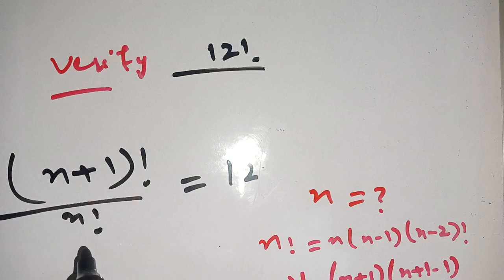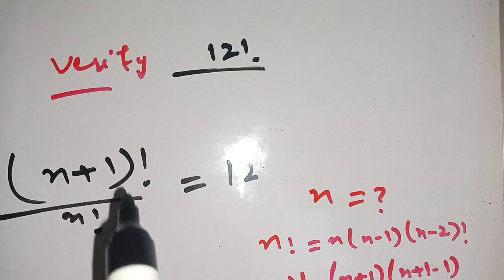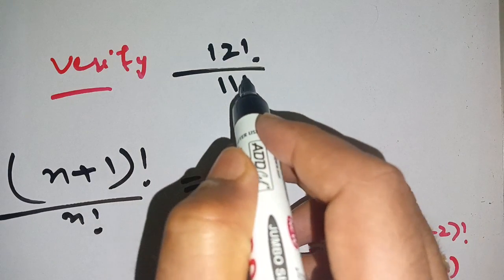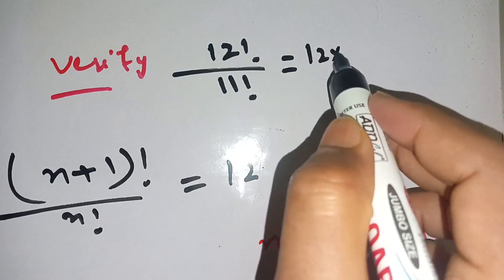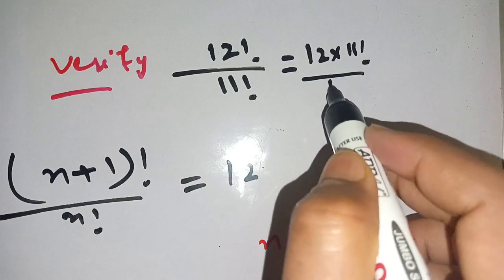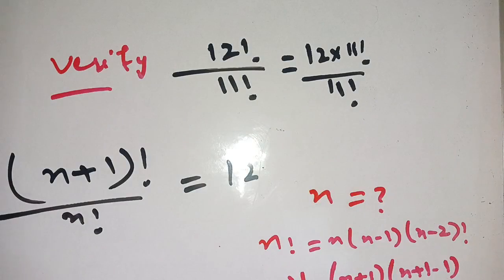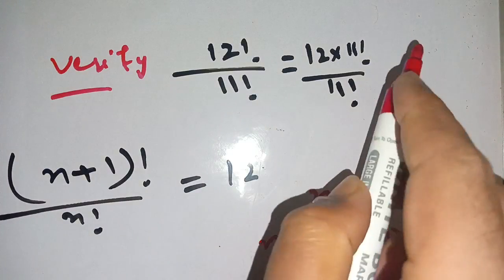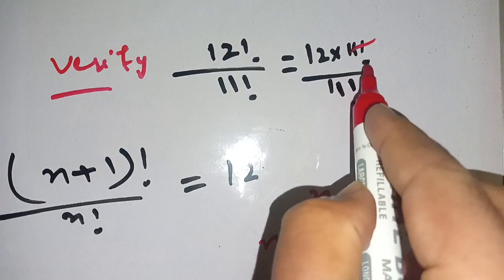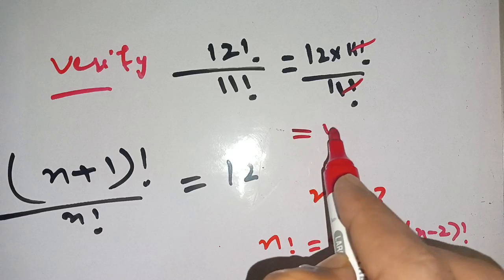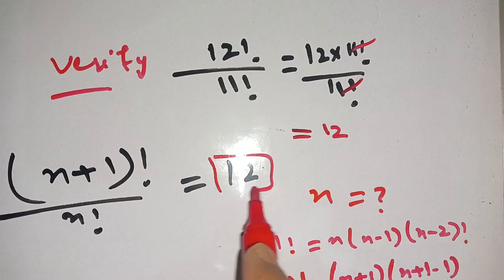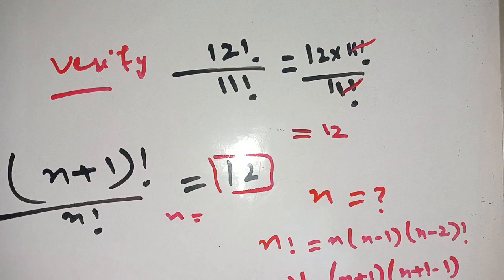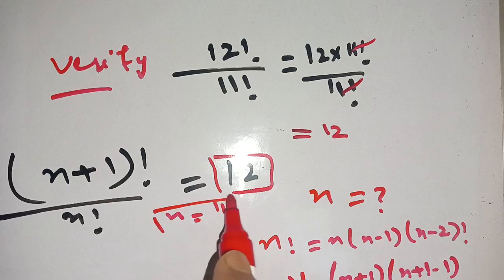In place of n! we put 11!, so we have 12 times 11! divided by 11!. We can cancel out 11! by 11!, and we get only 12, which equals our right-hand side. This confirms that n = 11 is our solution.